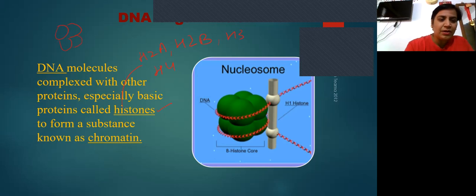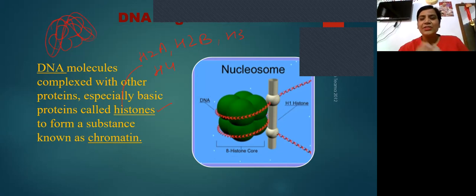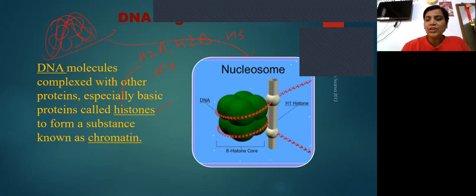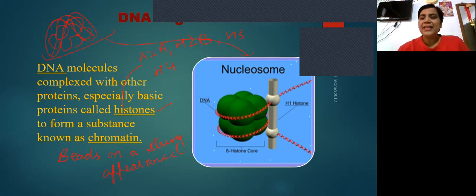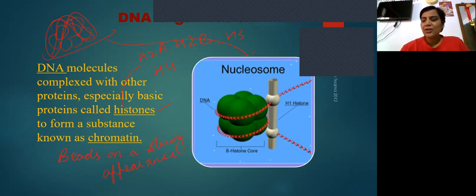These four histones are arranged in an octamer-type structure, and DNA is wrapped around them. This type of structure is known as a nucleosome, and this appearance is known as beads on a string. So, the DNA of eukaryotes is arranged in the form of nucleosomes, or beads on a string, in the chromosomes.